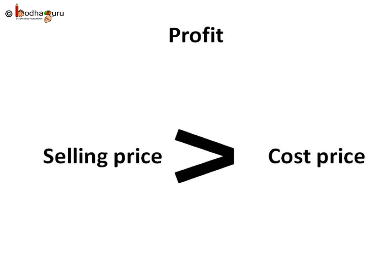In summary, Rahim has to make profit to be rich. He makes profit when he earns more than what he has spent. Profit means selling price is greater than the cost price. Like, Rahim spent 50 rupees to buy vegetables and earned 80 rupees by selling the sandwiches made from those vegetables. Selling price is 80 and it is greater than the cost price which is 50. So he made some profit which he can spend on his family and other needs.